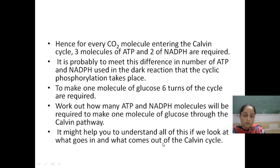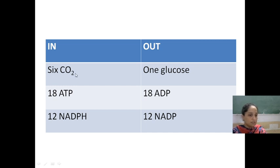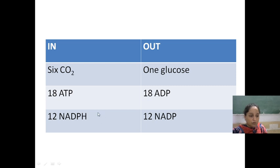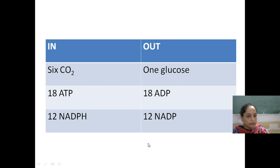Let's see what goes in and what comes out of the Calvin cycle. 6 CO2 molecules go in. ATP and NADPH are consumed and converted to ADP and NADP+ respectively, releasing inorganic phosphate. This was all about the basic version of the Calvin cycle. The advanced version with complete reactions will be covered in the next video. Thank you.